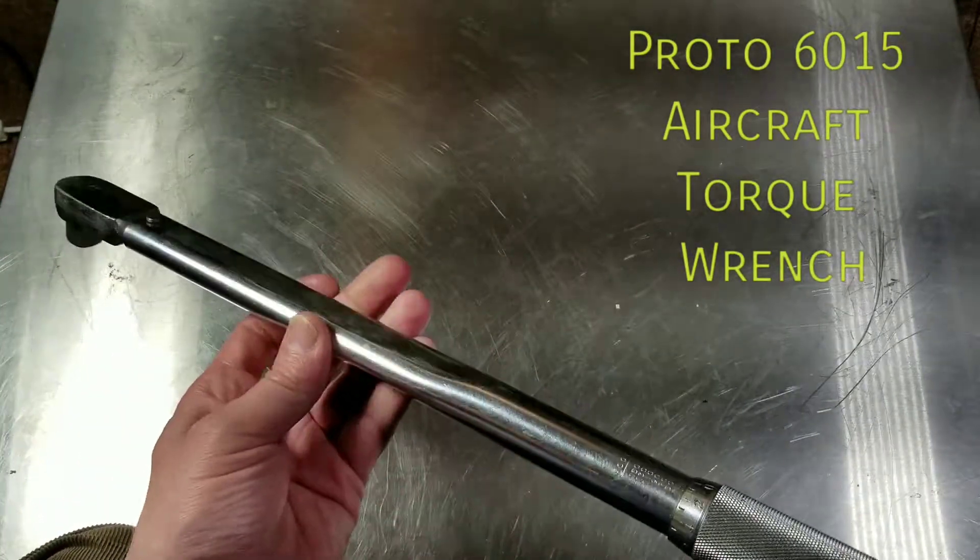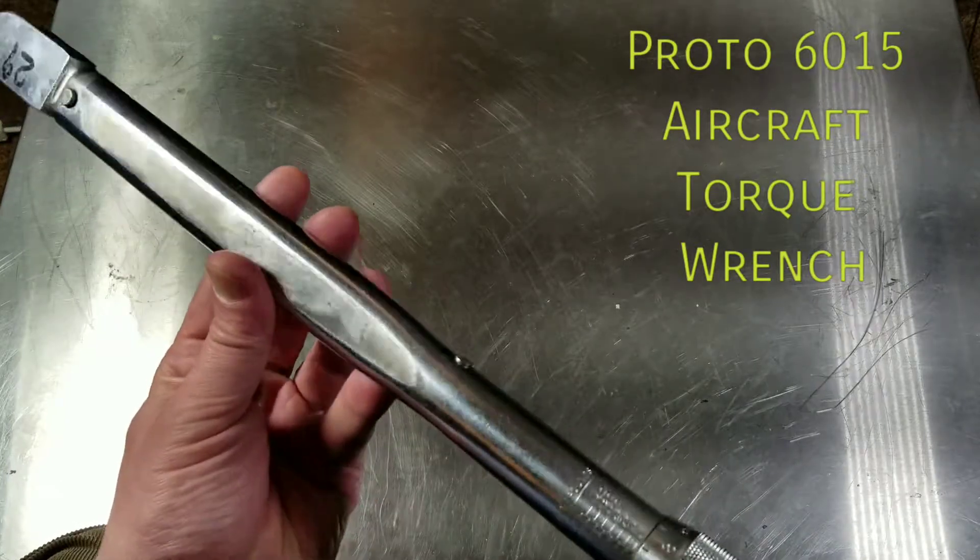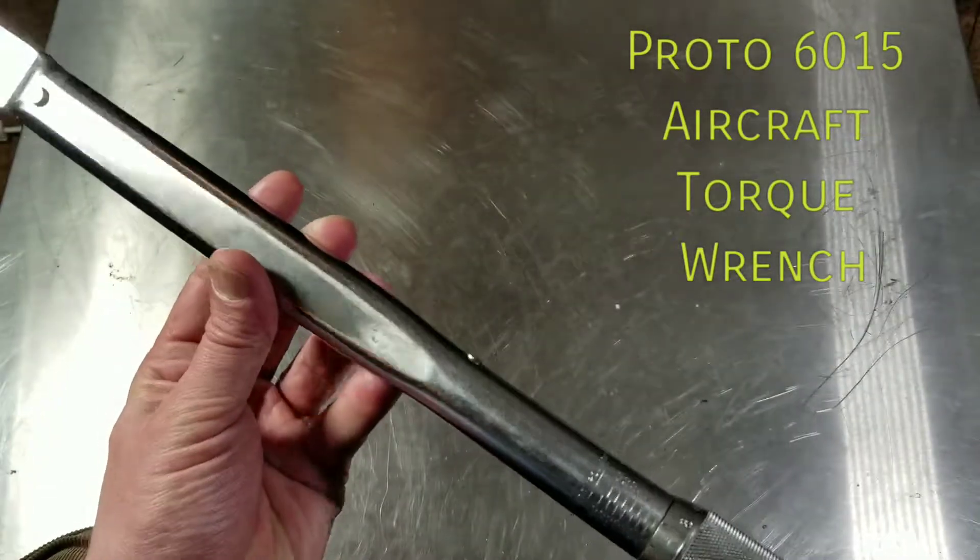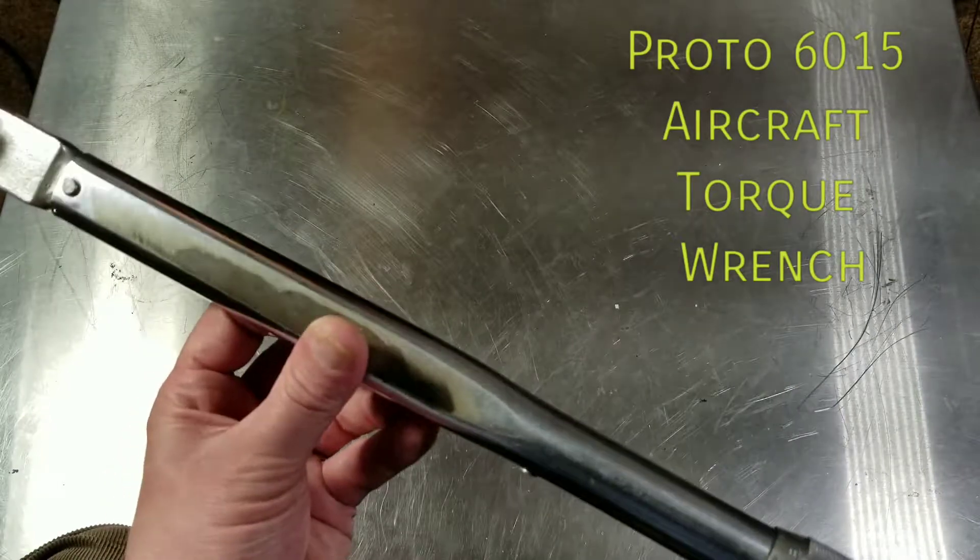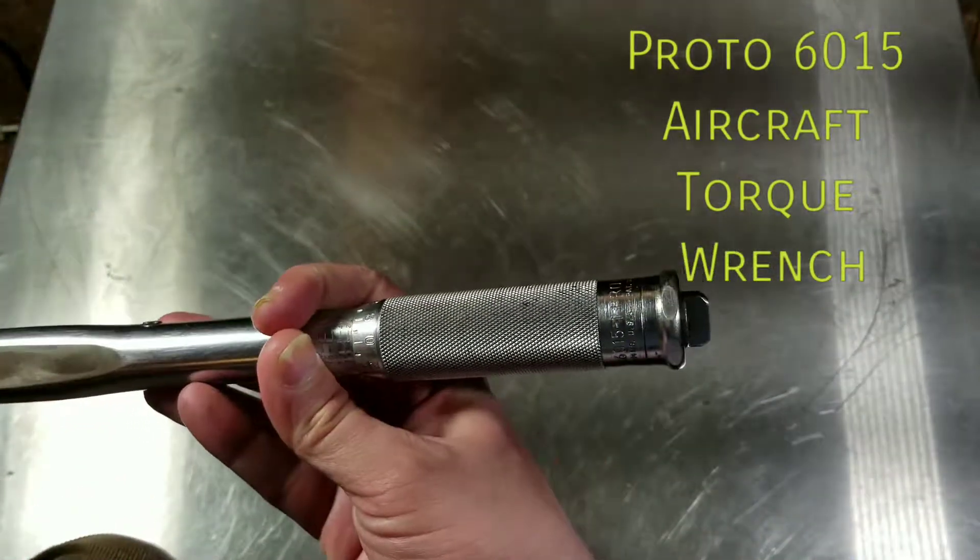This is a Proto 6015 and it goes from 10 foot-pounds to 150 foot-pounds. It only has imperial measurements on it. We'll go ahead and do a quick zoom so you can get a nice look at it.